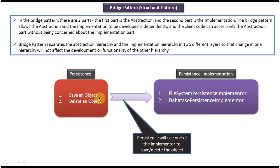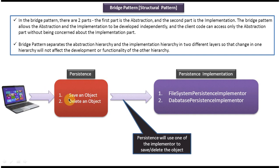This persistence will use one of the implementers to save or delete the object. The client will use only the abstraction to save or delete an object, and the persistent will use one of the implementers to save an object in a file system or database.